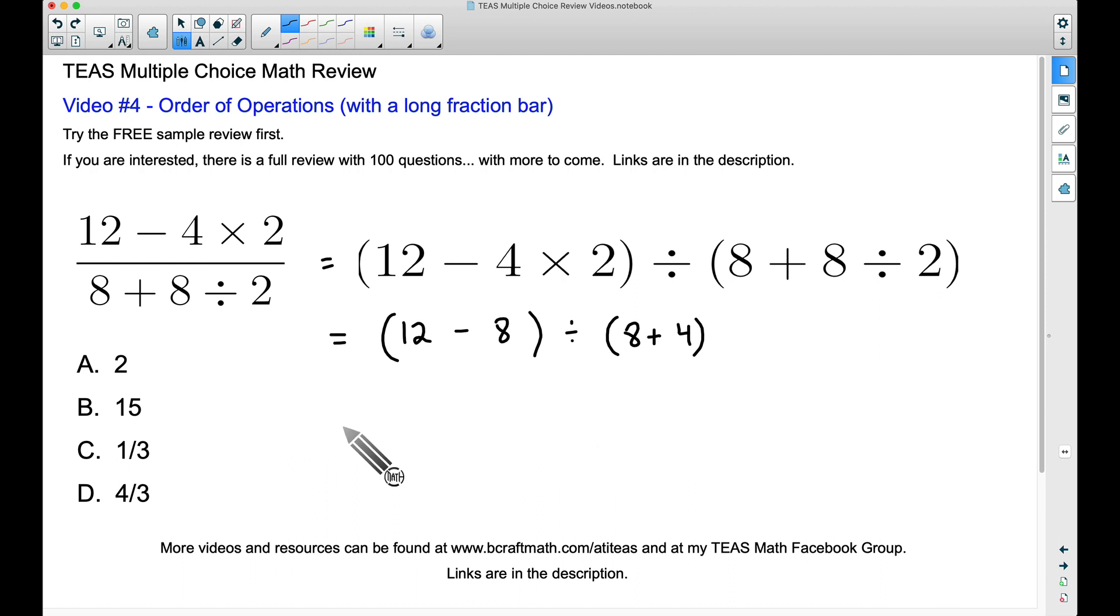So going on to the next line, 12 minus eight, we get four here divided by eight plus four, we get 12. So we have four divided by 12 based on the way I wrote it here. Now remember, this stuff was at the top, this stuff was at the bottom. So we can still write this as a fraction, which is going to be four over 12. That still means four divided by 12.